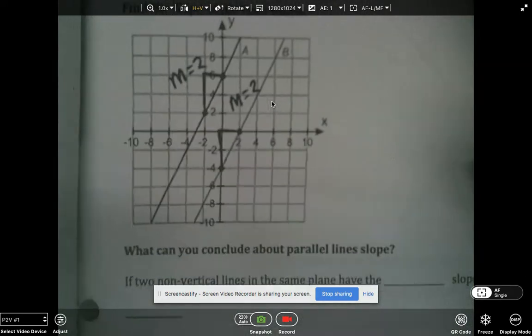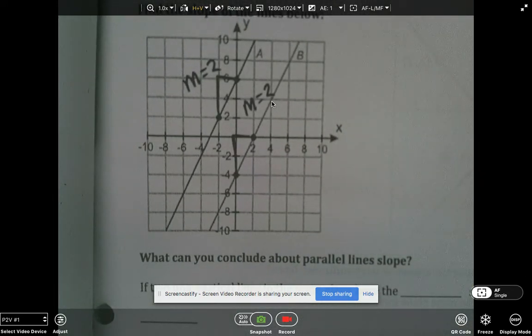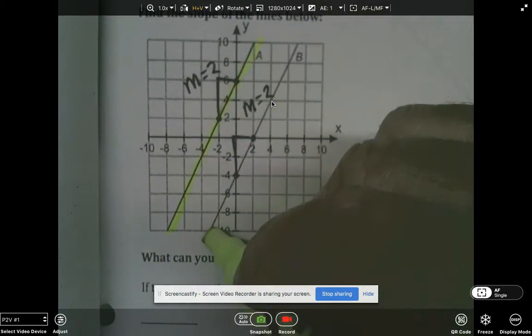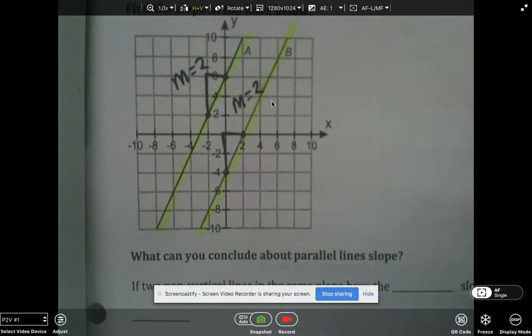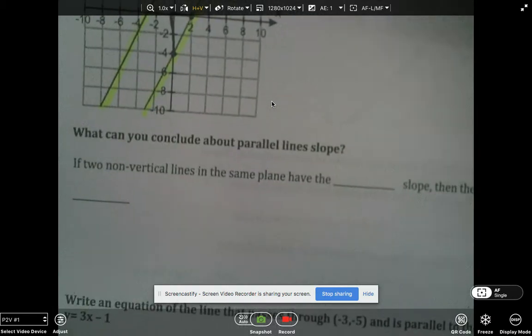Now this is a very simple question. Would you say that these two lines A and B, are they parallel or are they perpendicular? Yeah, they're definitely parallel. So what can you conclude about parallel lines and their slope?